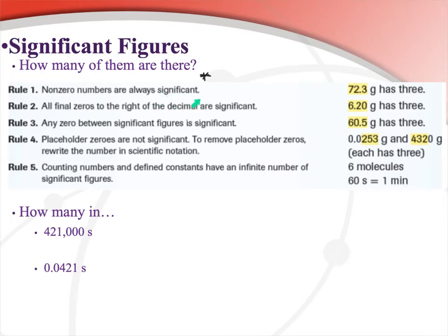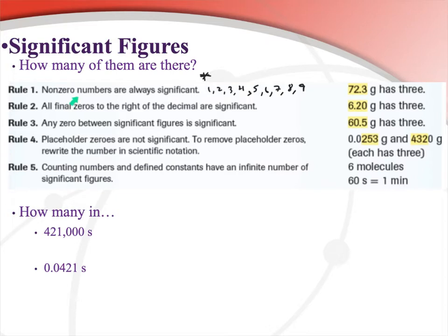When writing down data points with numbers, we need to write down the right number of significant figures, and we also need to know how many significant figures are in a number we're reading — so we know how certain scientists are of their numbers. Rule number one: all non-zero numbers are always significant. Anything that's non-zero — 1, 2, 3, 4, 5, 6, 7, 8, 9 — those all count. The only number that may not count is a zero. So 72.3 has three significant figures — the 7, the 2, and the 3 all count.